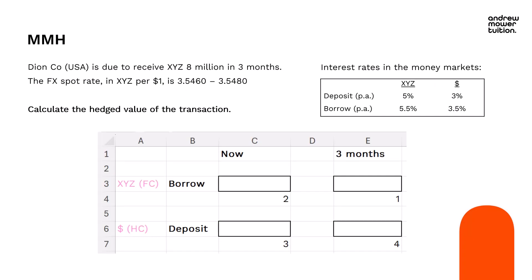I've started by getting my template up — the four boxes. Because this is a receipt question, I've put deposit on the bottom and borrow on the top. The foreign currency, XYZ, is on the top row and the home currency, dollars, on the bottom. Column C is 'now' and column E is 'the future' — three months' time. We're receiving 8 million in three months, so that goes into box one. We start in box one, and put in the amount we are set to receive: 8 million XYZs.